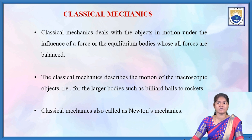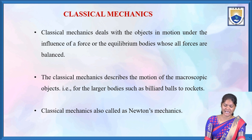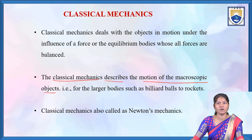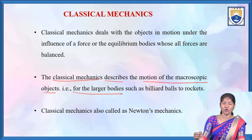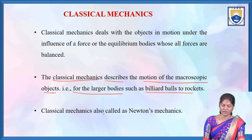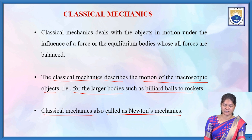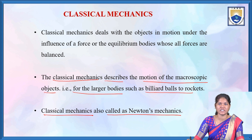Classical mechanics deals with objects in motion under the influence of a force, or equilibrium bodies whose all forces are balanced. Classical mechanics describes the motion of microscopic objects, giving results for larger bodies such as billiard balls to rockets. Classical mechanics is also called Newton's mechanics or Newtonian mechanics, as it obeys the laws of Newton.